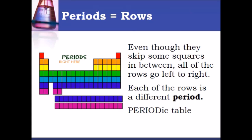But all the rows go from left to the right. Each of the rows is called a period and that's where the name periodic table came from.